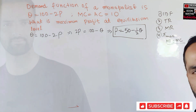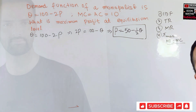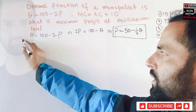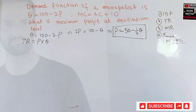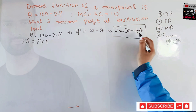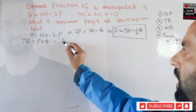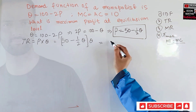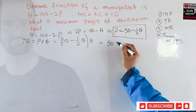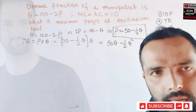After applying those steps we can find the equilibrium level of output and price. For total revenue, we know that total revenue is equal to price into quantity. In place of P we substitute 50 minus one-half Q, then multiply by Q. This gives us total revenue equal to 50Q minus one-half Q squared. This is our total revenue function.